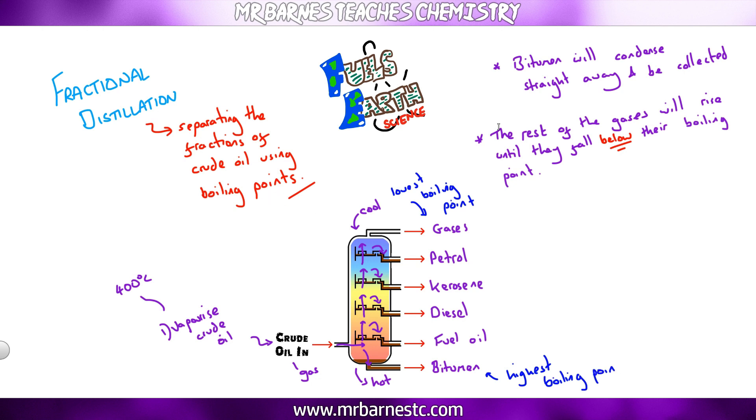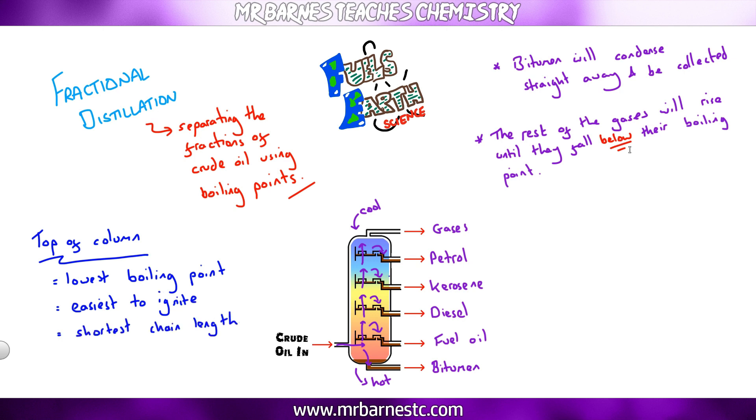What you will be asked to do is work out the properties or describe the difference in properties between different fractions in our fractionating column. So if we talk about the top of the column, we've already said it has the lowest boiling point. It's also the easiest to ignite, it has the shortest chain length, so that is the size of the molecule, the amount of carbon atoms in there, and it's also the least viscous which means it's the runniest.